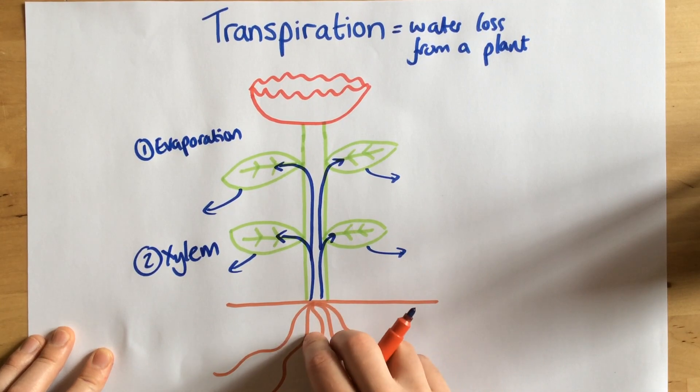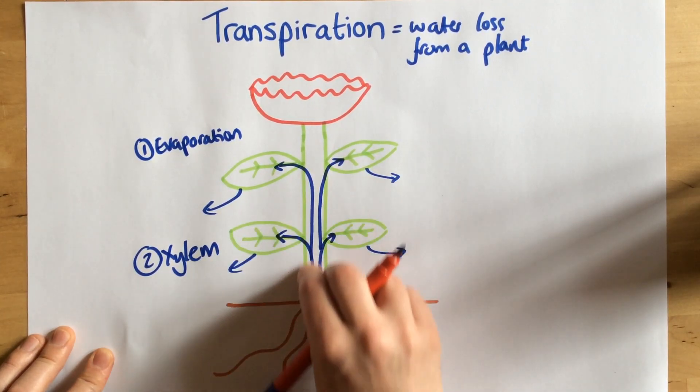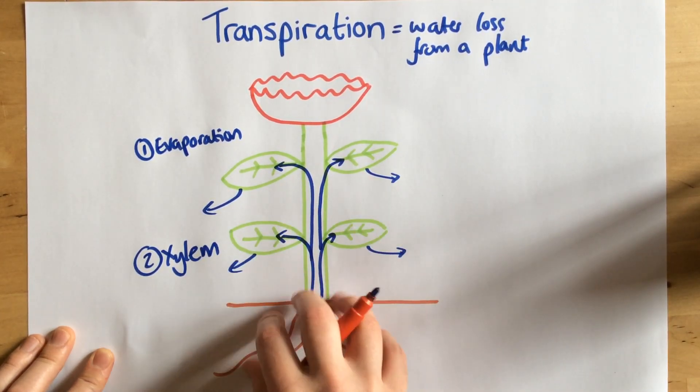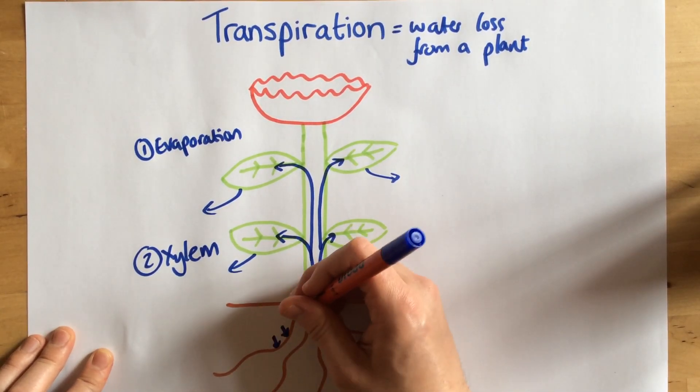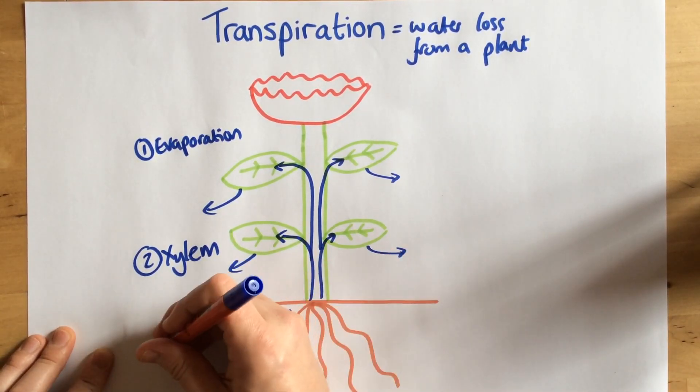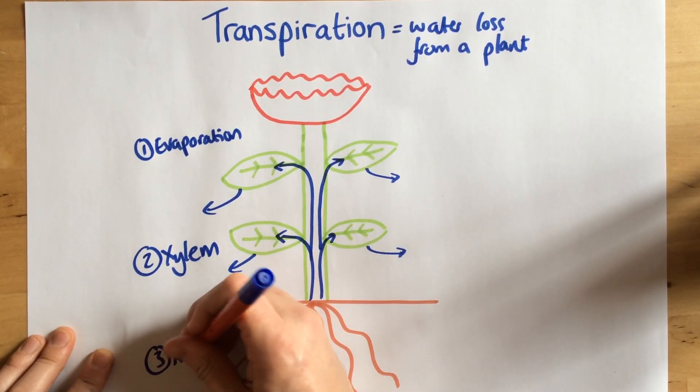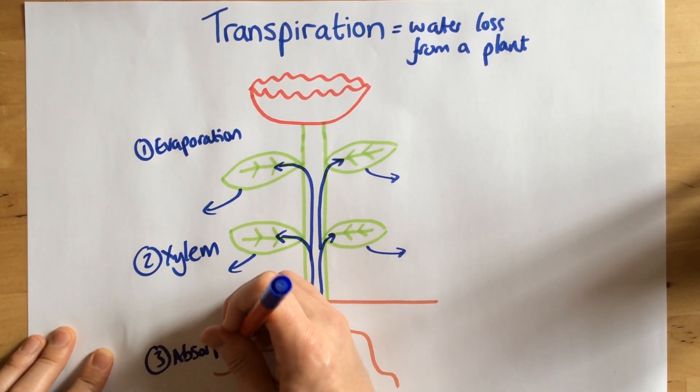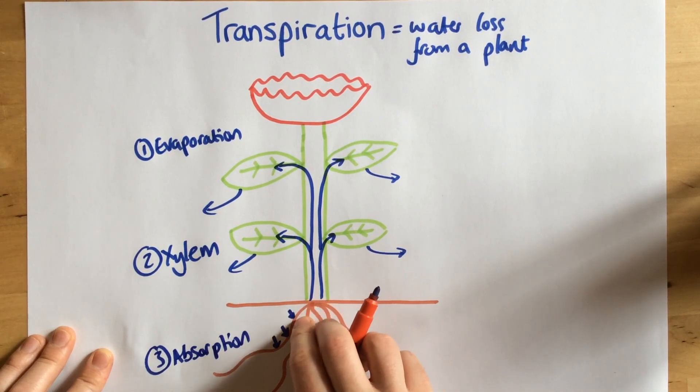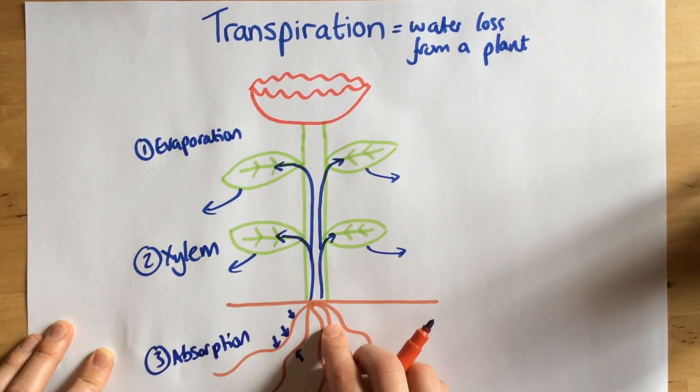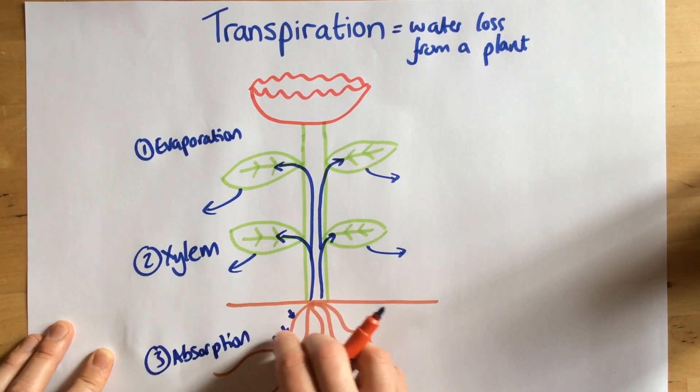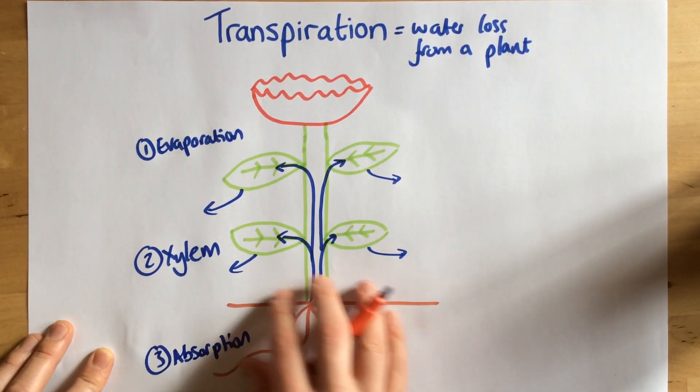So again, as water is drawn up, this causes more water to be absorbed into the roots. So the third process in this is absorption. As that water gets drawn up through the plant through the xylem vessels, more water is absorbed into the roots from the water within the soil.